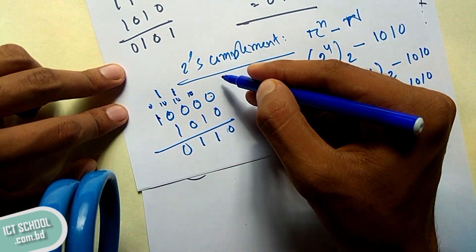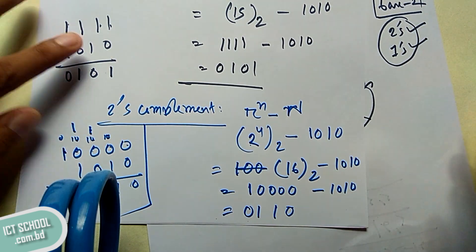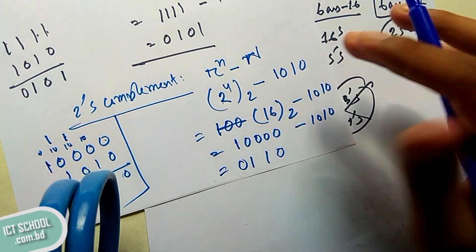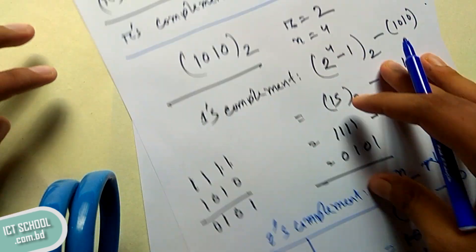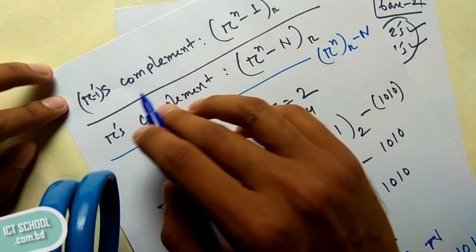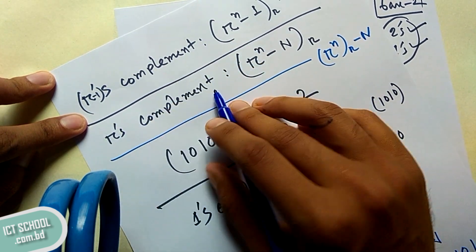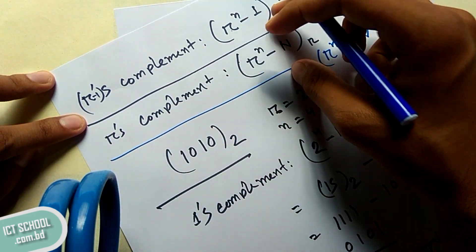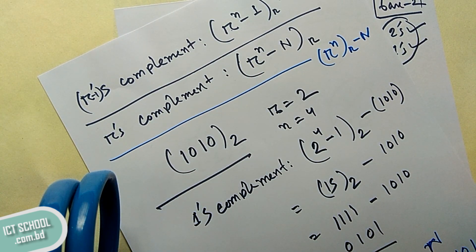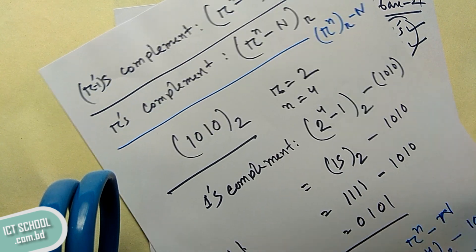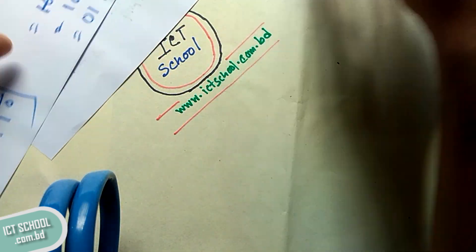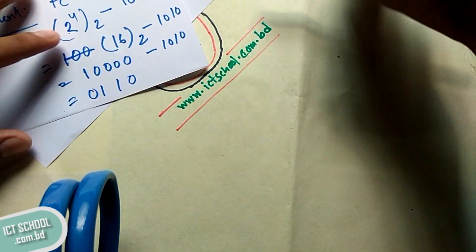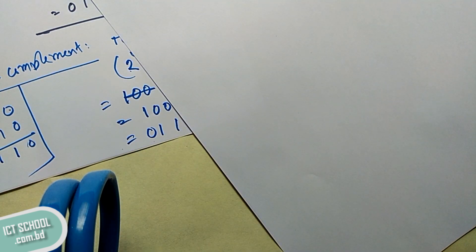So we have to do this problem. We will have a first step: how do we have to take the r minus 1s complement and rs complement? We have to take the rs complement and r minus 1s complement and rs complement. We have to take the base 10s complement and 9s complement.